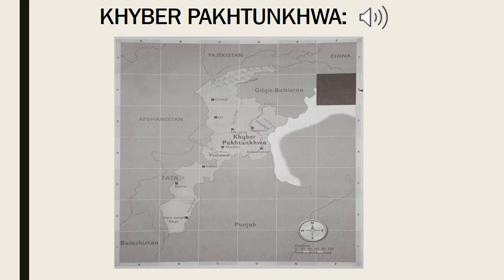Here we have given a map of Khyber Pakhtoonkhwa. We have to answer some questions by looking at the map carefully. The first question is to circle these places on the map: B3 Bannu, C6 Chitral, D4 Aptawad.